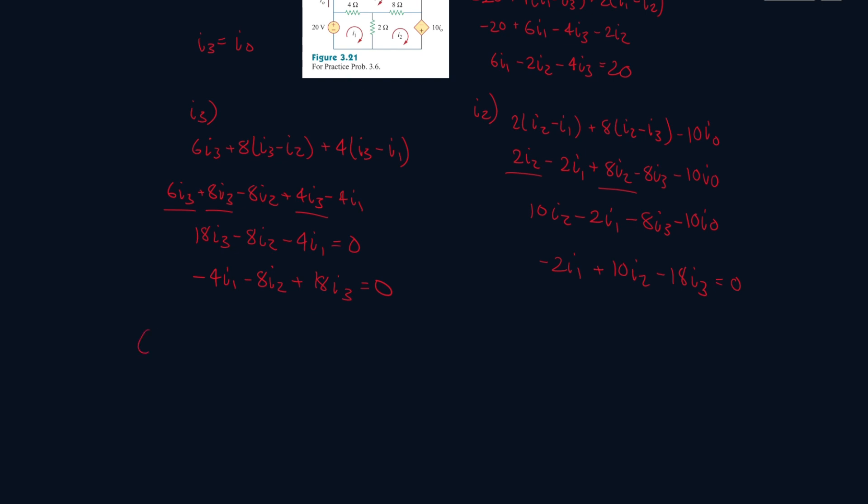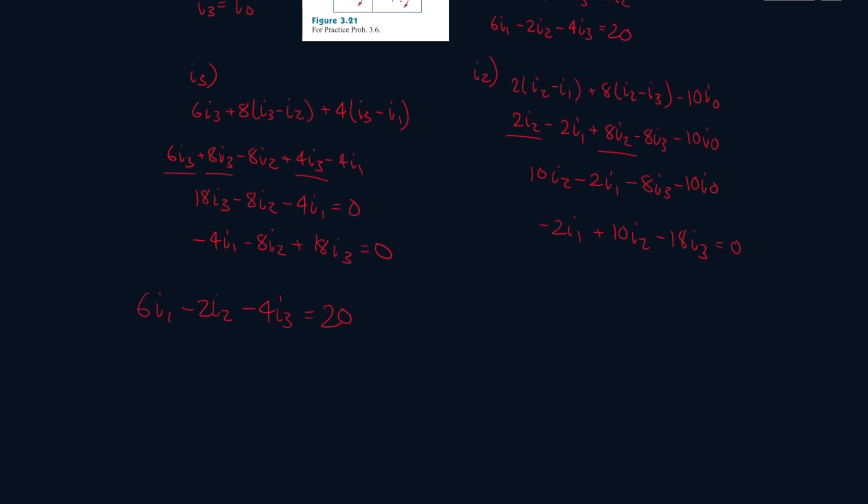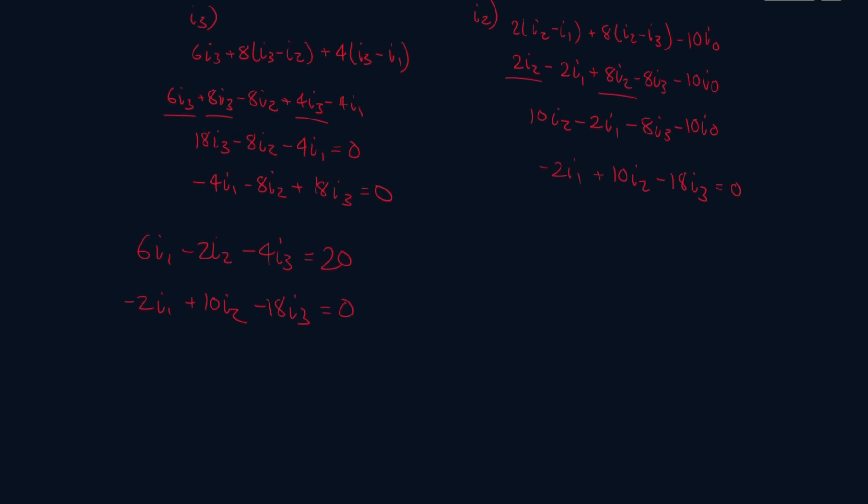Let's put everything down here. 6I1 minus 2I2 minus 4I3 equals 20. And then for I2, it's minus 2I1 plus 10I2 minus 18I3 equals 0. And for the next one, it's minus 4I1 minus 8I2 plus 18I3 equals 0.